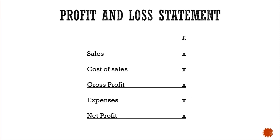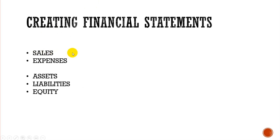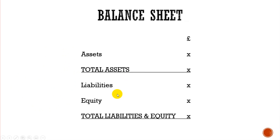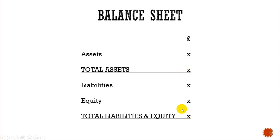So what is the balance sheet? Sales and expenses create the profit and loss. What creates the balance sheet? We have assets, liabilities, and equity. The reason this is called a balance sheet is because total assets should equal total liabilities and equity. Those two figures are underlined to highlight that they must balance.